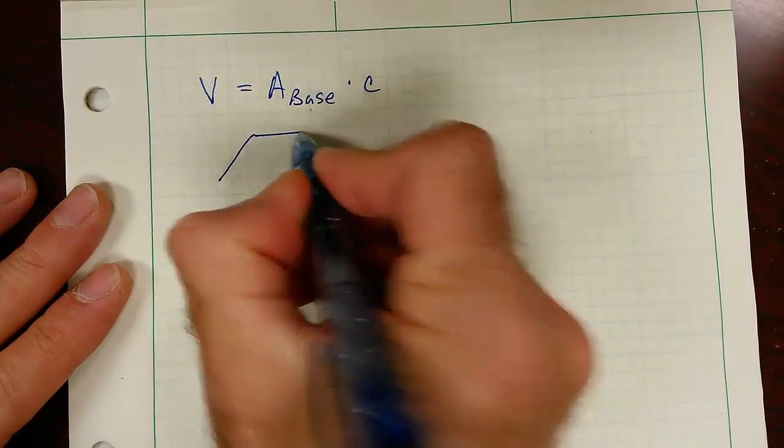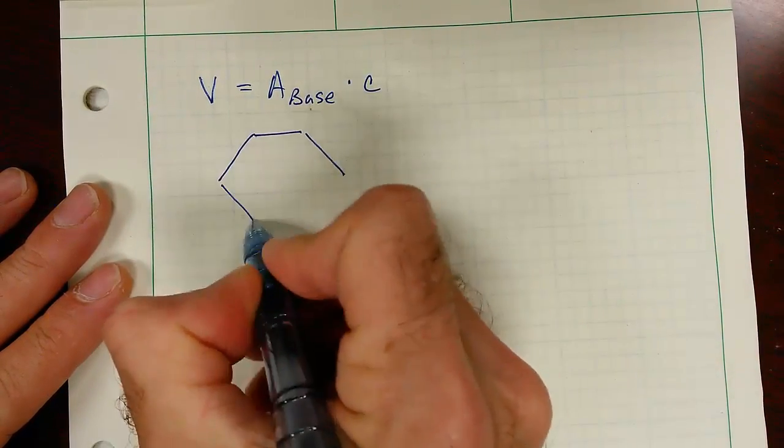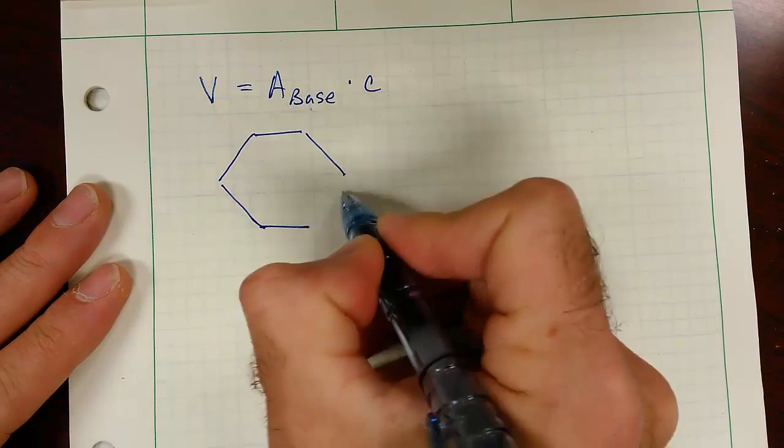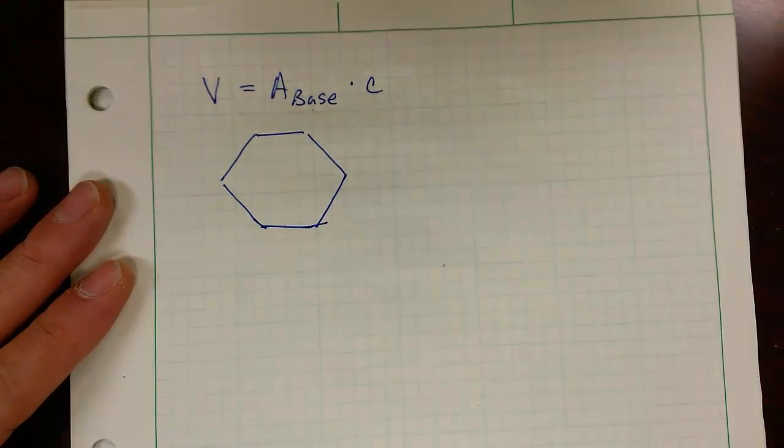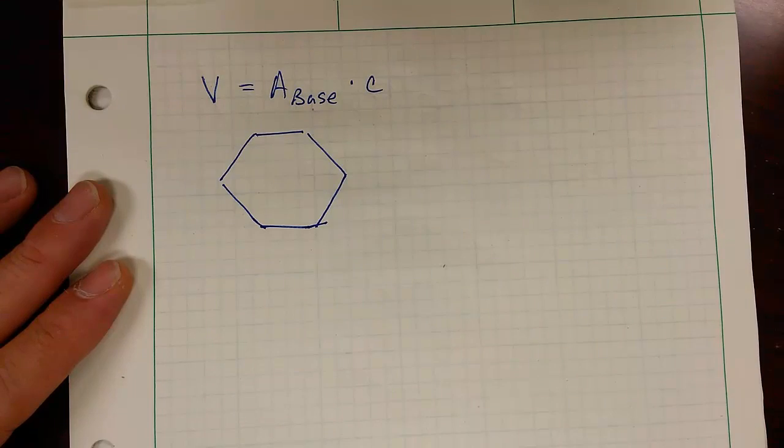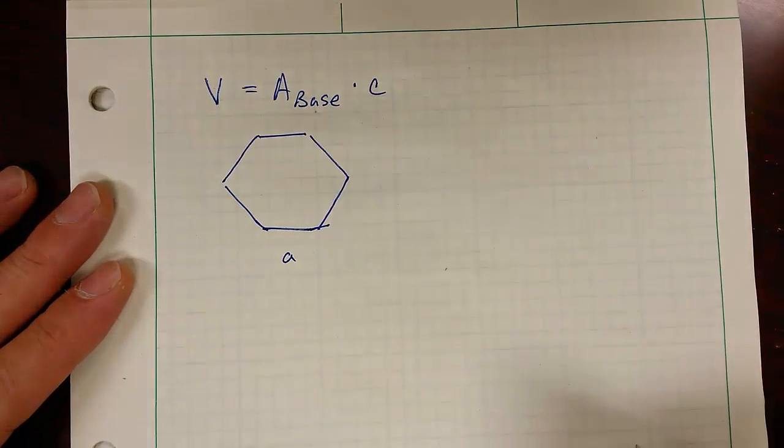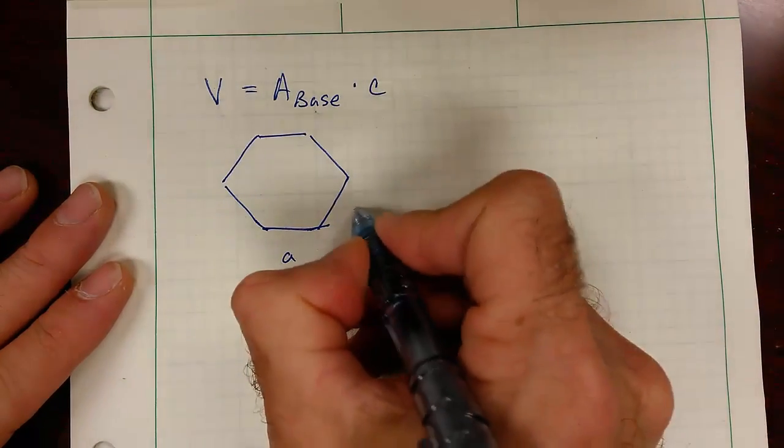So the area of the base is found as follows. First I'm going to draw a picture of the base, and it is a hexagon, and the side length is a. All sides have the same length.